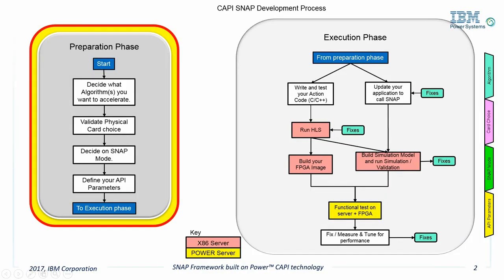The preparation phase of CapiSnap provides a basic framework for planning your accelerator. It consists of four steps that are critical to moving forward with your implementation. The steps are: selecting an algorithm to accelerate — this is the most important decision — picking the right snap-enabled FPGA card for your project, choosing the appropriate snap mode, and finally defining the application programming interface to call the accelerator. We will now go deeper into each of these steps.